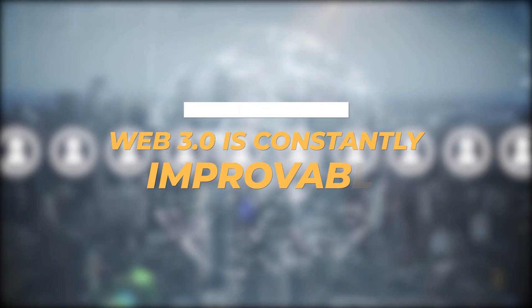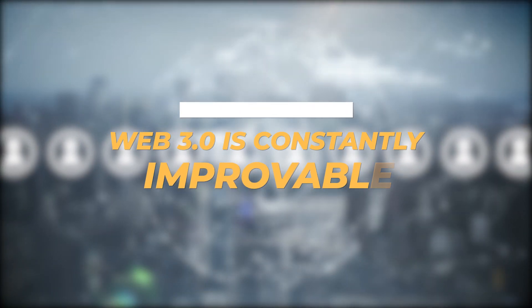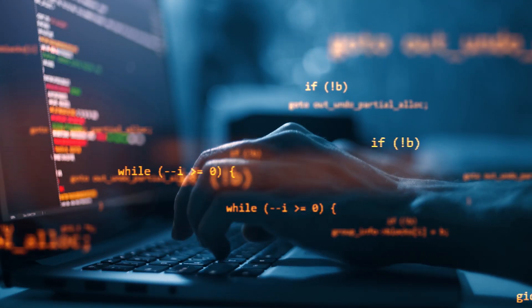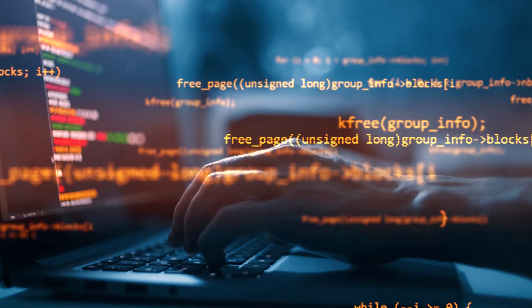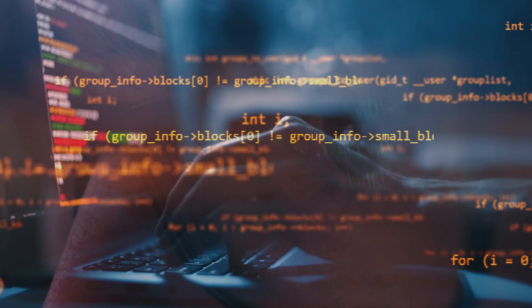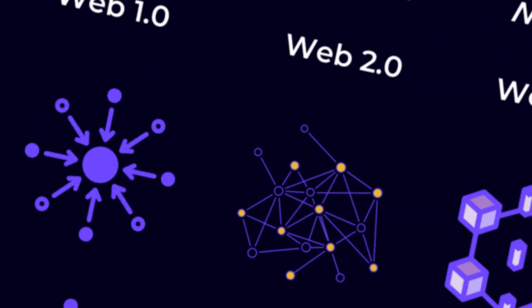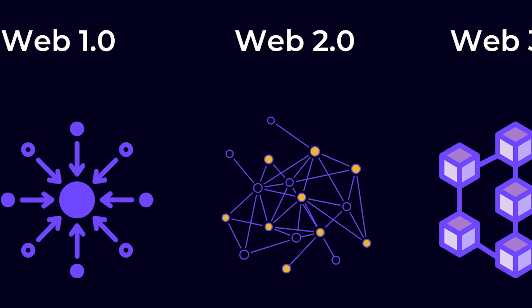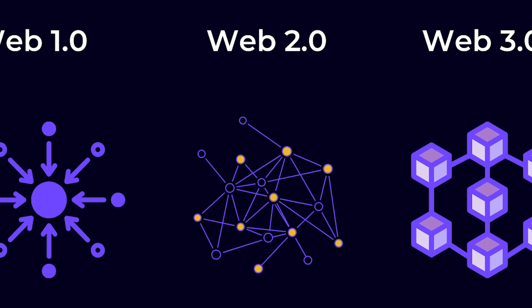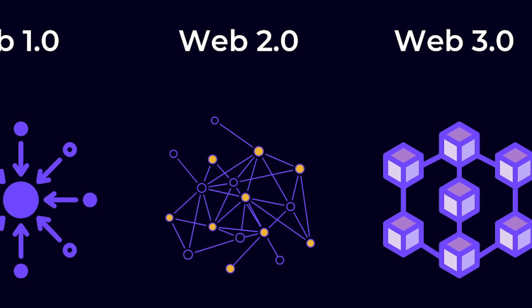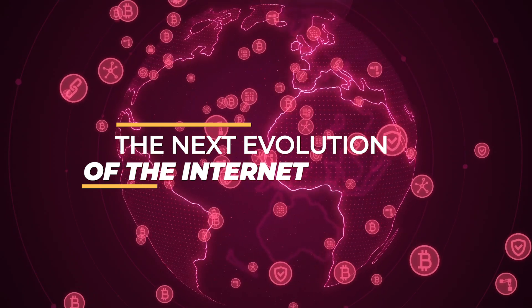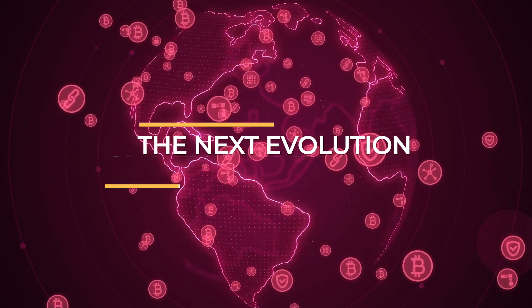Web 3.0 is also constantly improvable. This means that all the code written for a particular application is open source and can be viewed by anyone. Developers and tech experts have the permission to take that code and build something better since it's publicly available. Similar to how Web 1.0 and 2.0 evolved and merged into each other, there's no specific date to when 3.0 will start — instead, it's just seen as the next evolution of the internet, essentially using blockchain technology.